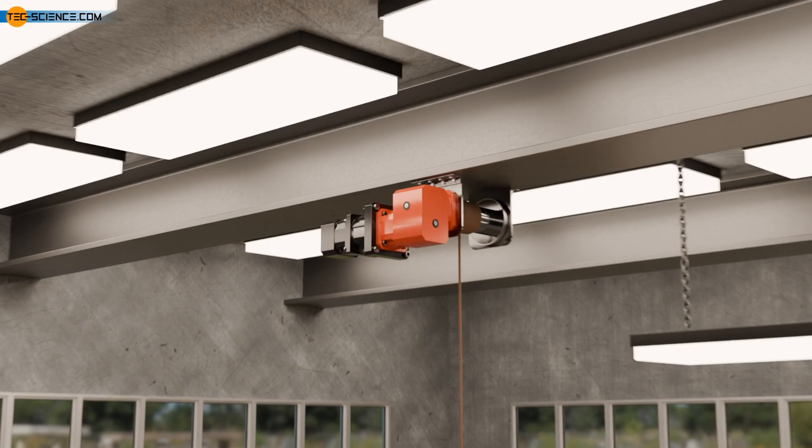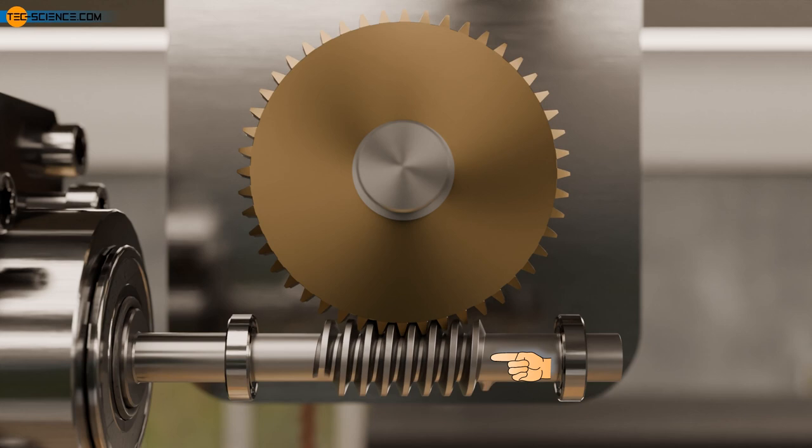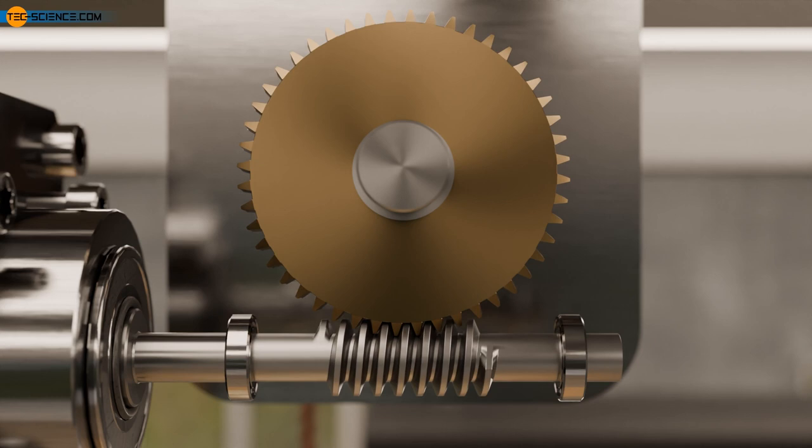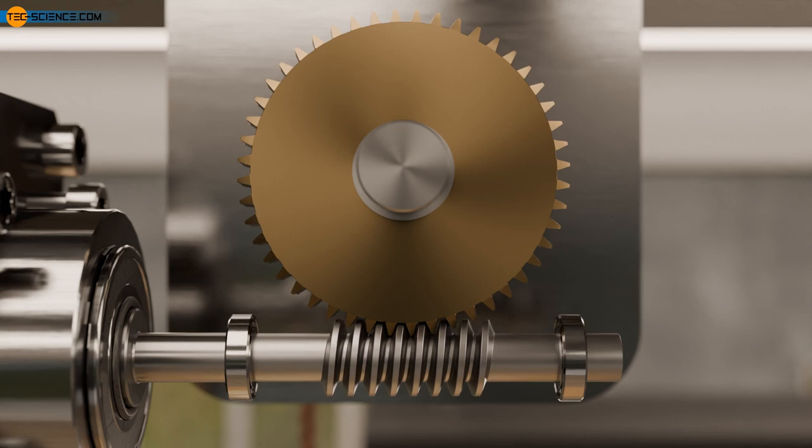Worm drive. The worm is a special type of gear. Here the tooth wraps around the worm shaft like the thread of a screw. The gear that meshes with the worm is called the worm gear. This type of gearbox, consisting of a worm and a worm gear, is generally referred to as a worm drive.